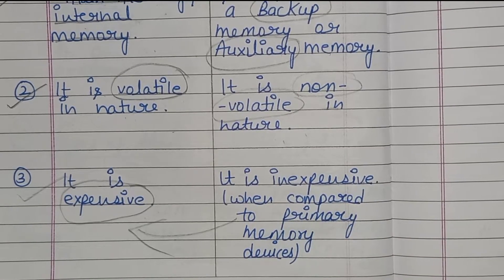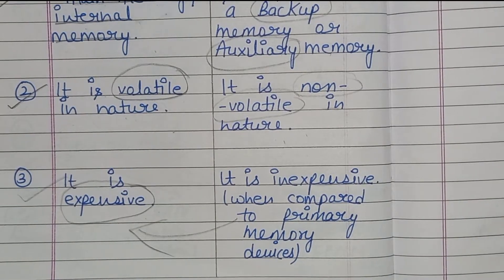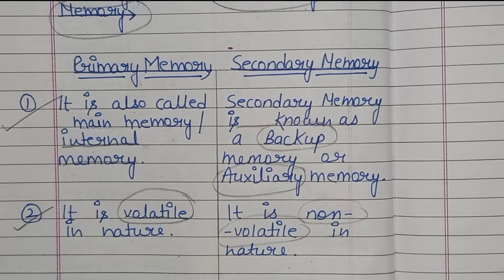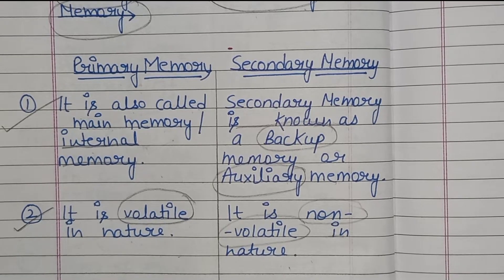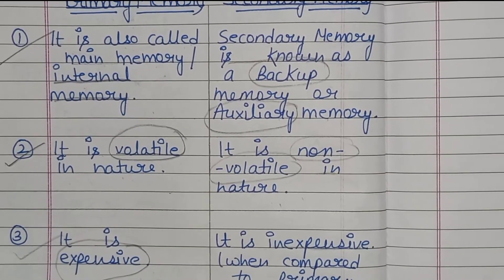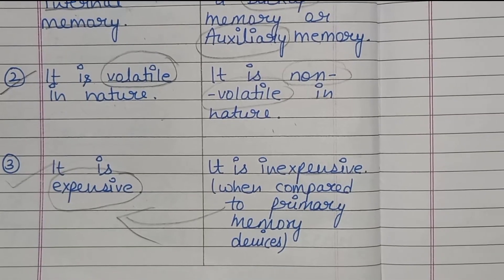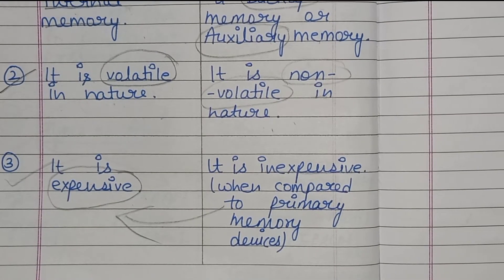Now I have discussed three points. First, primary memory is called main memory and internal memory, while secondary memory is called backup memory and auxiliary memory. Second, primary memory is volatile in nature and secondary memory is non-volatile in nature. Third, primary memory is expensive and secondary memory is cheaper compared to primary memory.